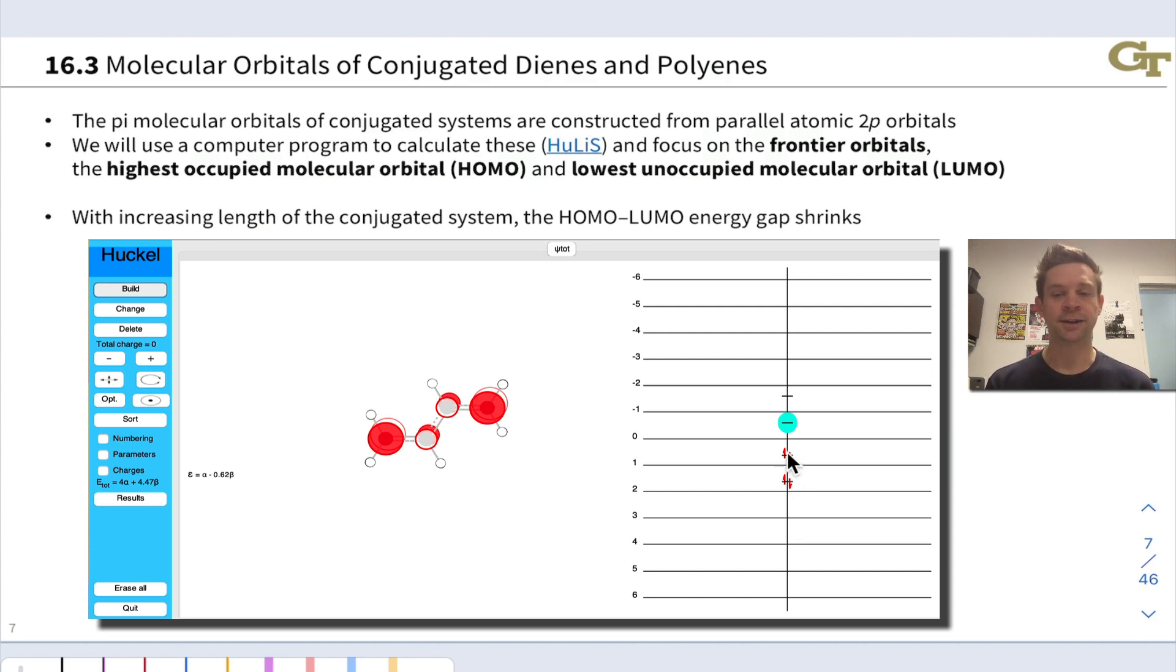Another thing to point out here is this gap between the highest occupied and lowest unoccupied molecular orbitals. It shrinks as we add more atoms. Notice that the HOMO-LUMO gap is about two units on this scale for ethylene. But if I add two more carbons to get back to butadiene, now that gap is quite a bit smaller, right around one unit rather than two. That trend is going to continue as we add additional double bonds.